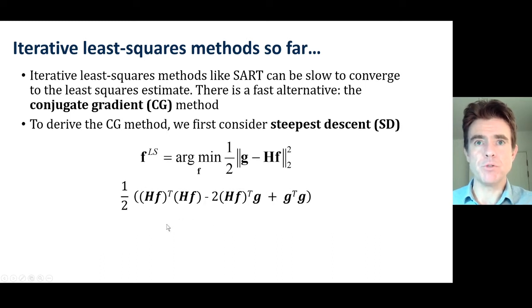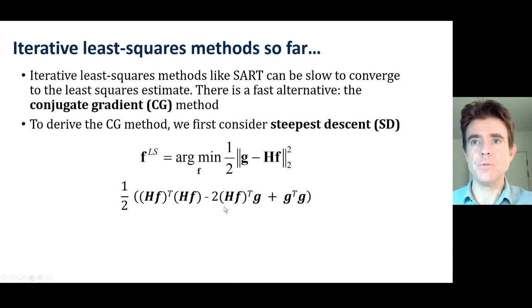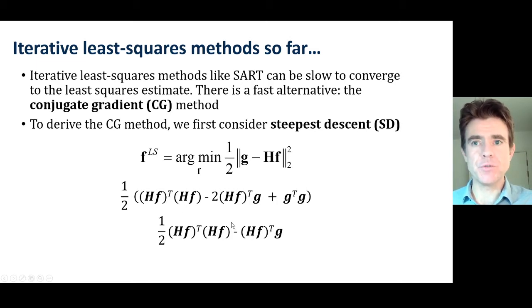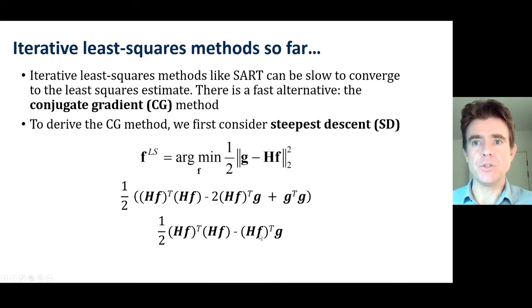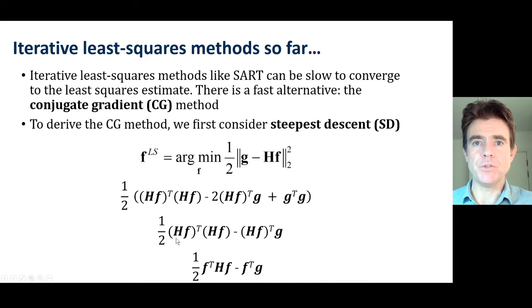We can see how it's related by expanding G minus HF squared. Looking at HF multiplied by itself — that's a vector times a vector giving a scalar product — we get HF transpose HF. Then HF with G gives HF transpose G, and there are two of those terms with a negative sign. Finally, we have G transpose G. This is the expansion of G minus HF squared. Since we're minimizing over F, the G transpose G term is completely independent of F and is discarded. Multiplying through by a half eliminates the factor of two, leaving minus HF transpose G.